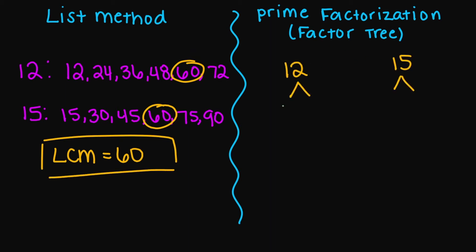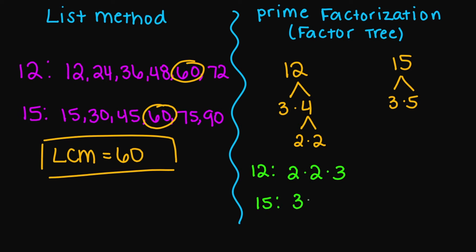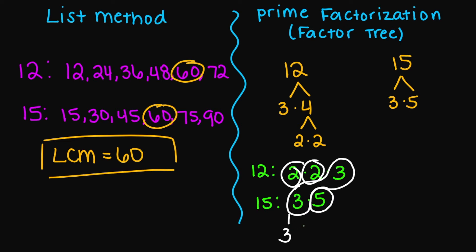So let's try the other way. My 12, we can factor that into three times four. My four, we can factor into two times two. My 15, we can factor that into three times five — can't factor any further. So my 12 is two times two times three, and my 15 is three times five. I have a pair of threes, so I write that one time. The other numbers — two, two, and five — are add-ons. Two times two is four, four times three is 12, 12 times five gives us 60.